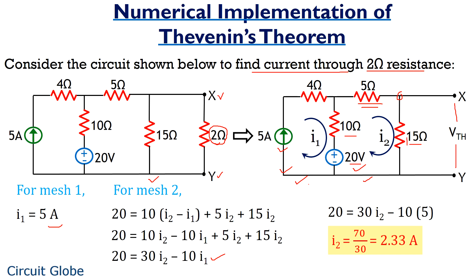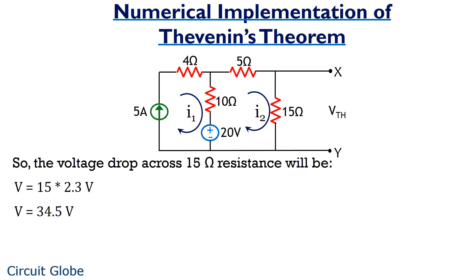As we know that voltage across parallel branches remains the same, so if we find the voltage across this particular branch, then automatically we will get the value of Vth. So let's calculate the drop across the 15-ohm resistance. The voltage equals 15 multiplied by I2, which is approximately 2.3 amperes, giving an achieved voltage of 34.5 volts.